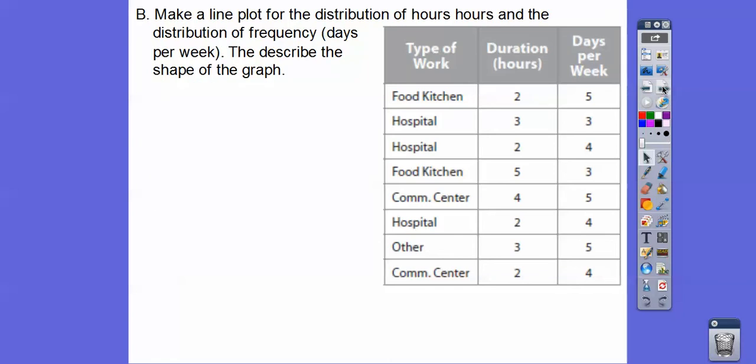So let's make a line plot for the distribution of hours and the distribution of frequencies, the days per week, and describe the shapes. I'm going to make a number line that's 1 to 6 for hours per day. The smallest numbers I see are 2s, so I'm going to put Xs above those. Then I see two 3s, one 4, and one 5 right there.